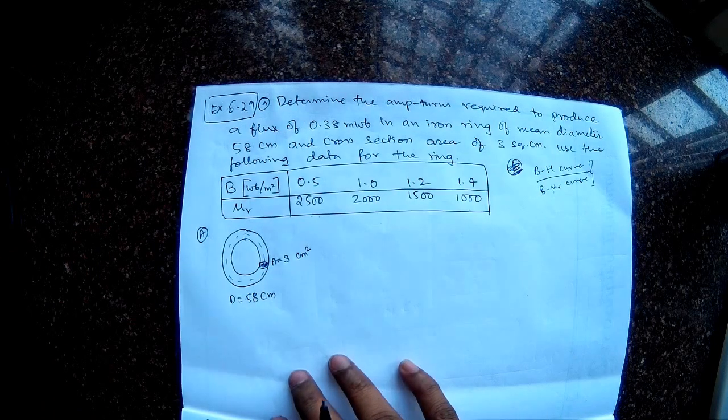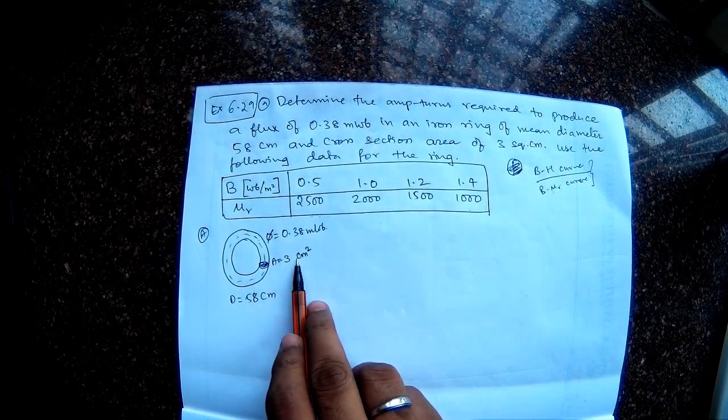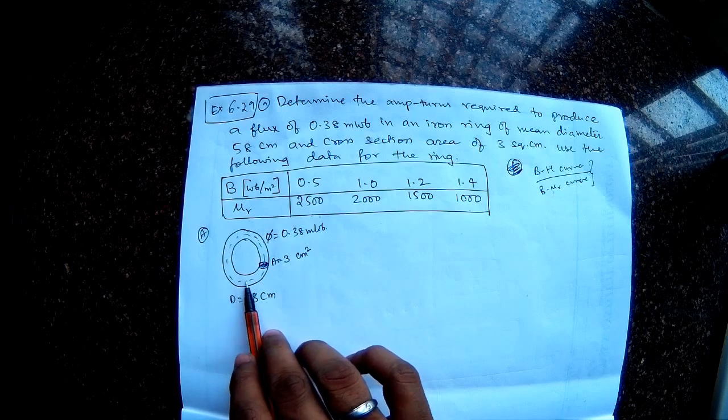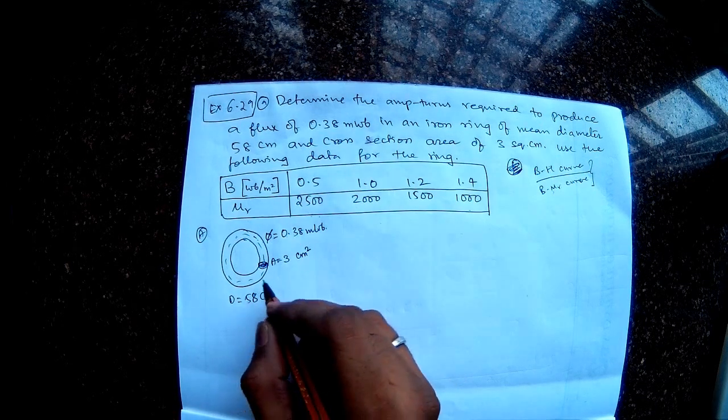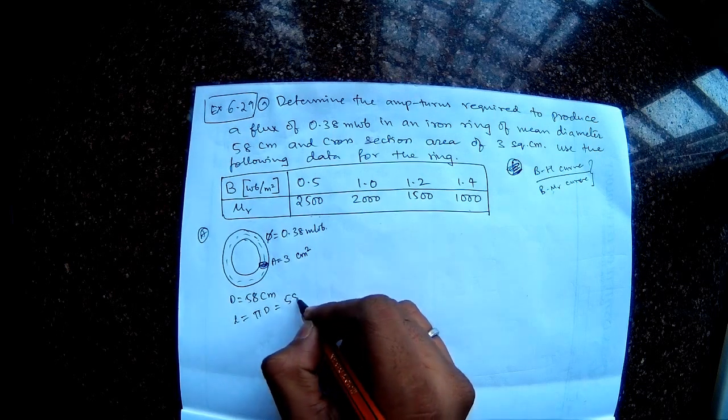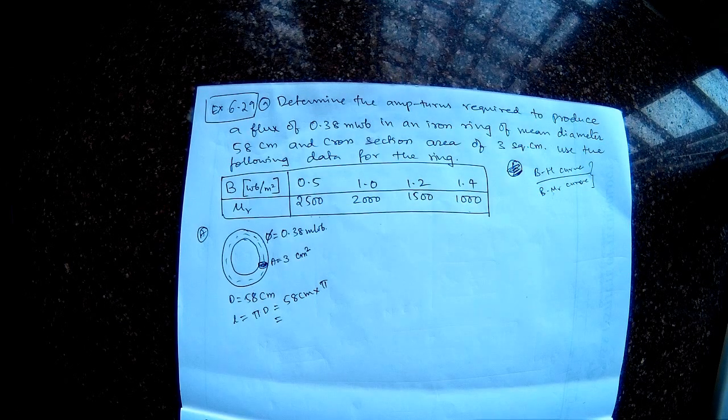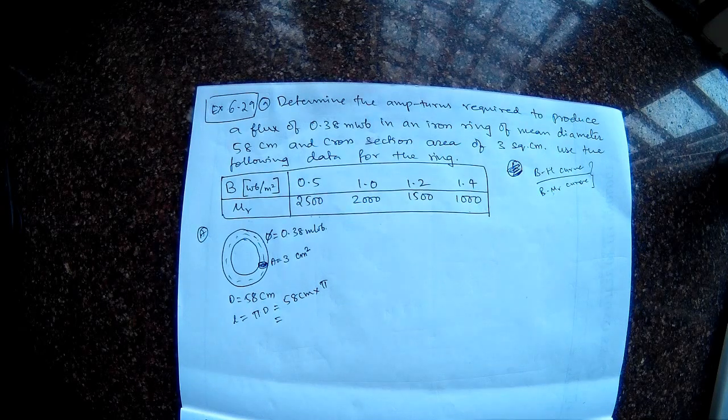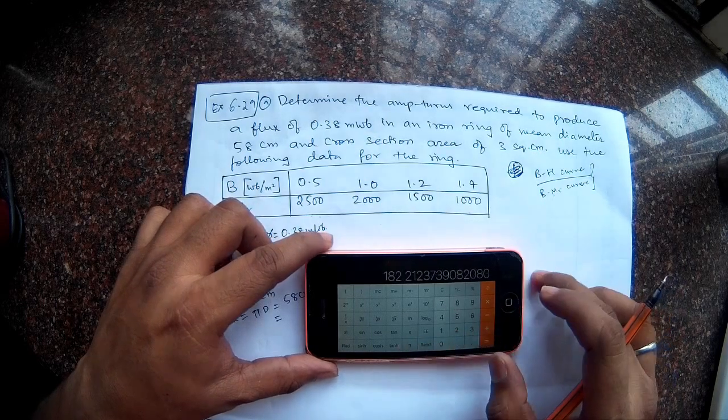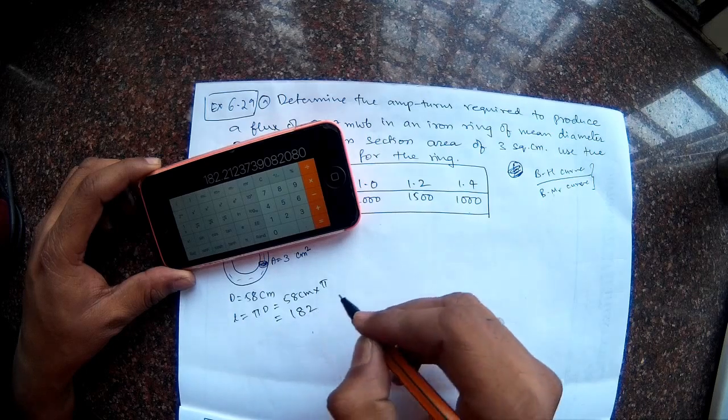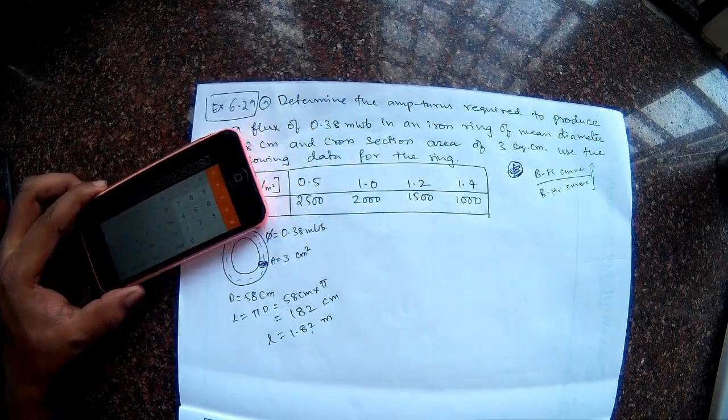So let's get back to the question. The flux is also given, so the flux is 0.38 milliwebers. So I know the flux, I know the area, and I know the length. But what is the length of the path? The entire path is 58 centimeters diameter, so what is the length is nothing but pi D. So 58 centimeters multiplied by pi. So let's first do that calculation. So I am getting my calculator. 58 multiplied by pi, so I get 182.2. So I am just writing 182 centimeters or this is 1.82 meters. So this is the length of the magnetic path.